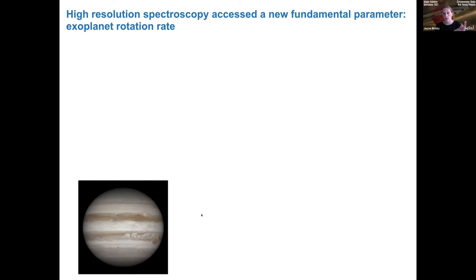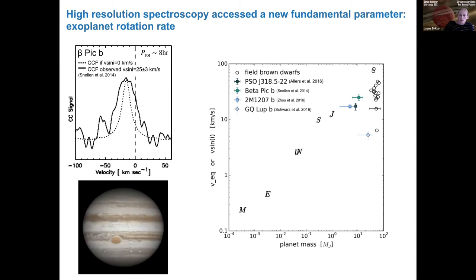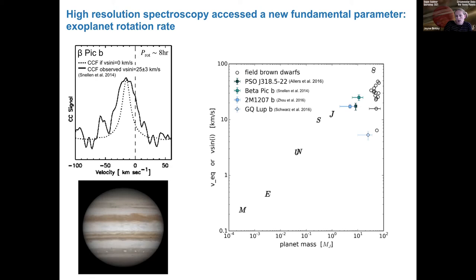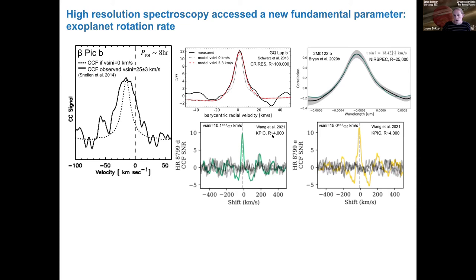Going back to the Beta Pic b long-slit result: if there were no rotation, the cross-correlation function width would be broadened purely by instrument resolution. But what we saw was broader — fit with a v sin i of about 25 km/s, corresponding to a rotation period of about eight hours. We then compared planetary mass as a function of v sin i and in the solar system there's a trend forming, though with few data points. Since then, more results have come from Marta Bryan using NIRSPEC at resolution ~25,000 and from Jason Wang using KPIC at slightly lower resolution.